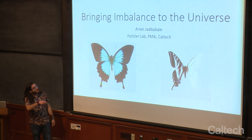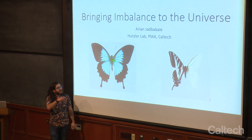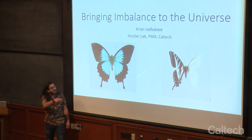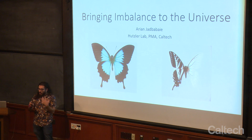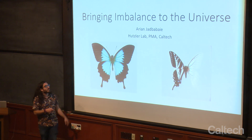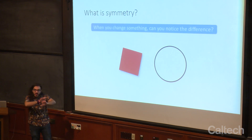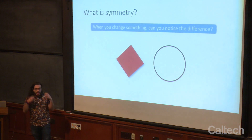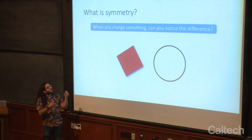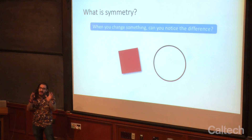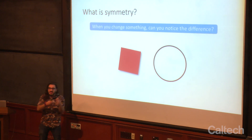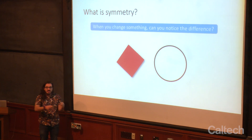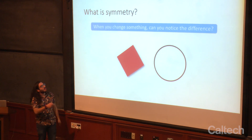So here I have two pictures of butterflies. Obviously one is symmetric, so it looks the same if you flip it, and the other one looks different. This is a really, really important concept in all of physics. So first I want to start from the basics: what do I mean when I say symmetry? When you think of symmetry, you should think of when you change something, can you notice the difference?